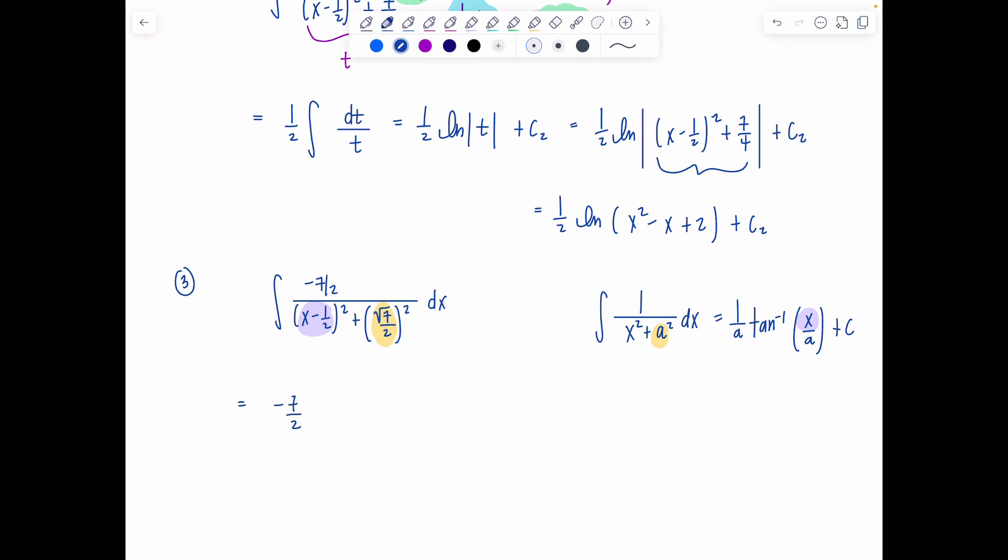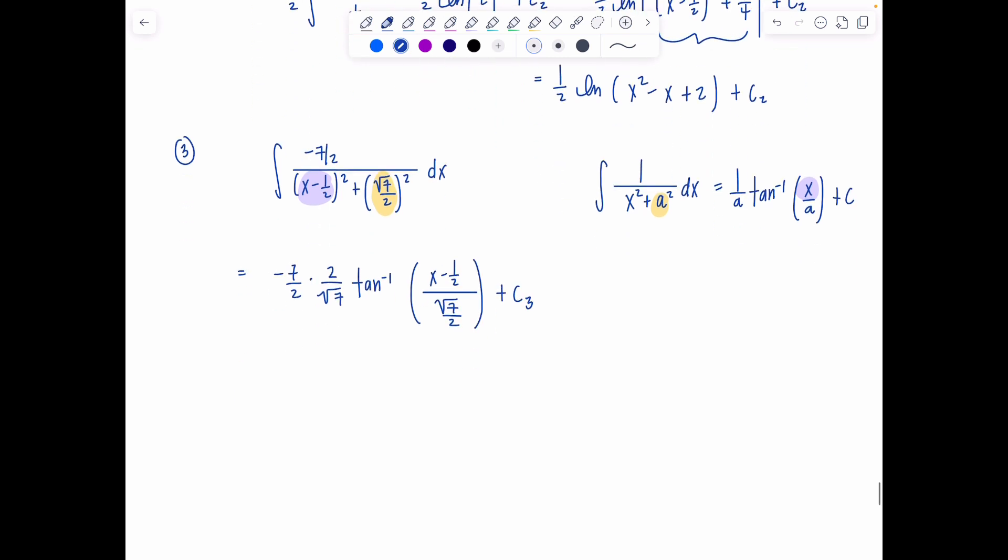And then just pay no mind to this negative seven-halves. He's not bothering anybody. Just keep him along for the ride. So we've got negative seven-halves. Then outside, we need one over a. So one over rad seven over two is just the reciprocal. Two over rad seven. And then we have tan inverse. Remember, instead of plain old x, it's x minus one-half over rad seven over two plus c three. Things are going fabulously. These cancel, and then negative seven over rad seven. That's just negative rad seven. Tan inverse. Now here's a fabulous thing that's going to happen. This two, if I divide by a half, that's going to multiply by two up in the numerator. So I'm going to be left with two x minus one over rad seven. And you know, you're not in algebra anymore. You need not be so paranoid when you have a radical in the denominator. We're going to leave it. It's fine.